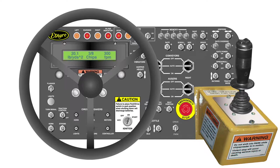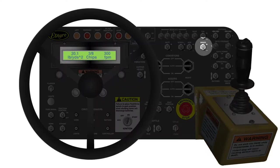It is important to understand that the memory functions simply restore the selected values to the operator screen. If one of the values is changed while operating, such as the speed set point, the speed will change — but the values stored in the memory will not change.